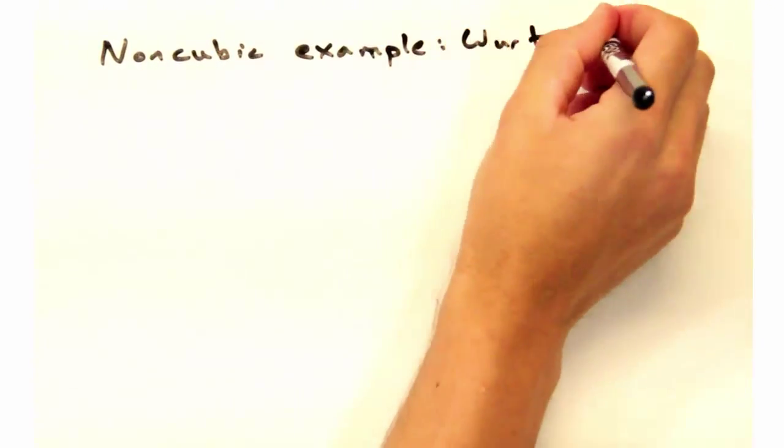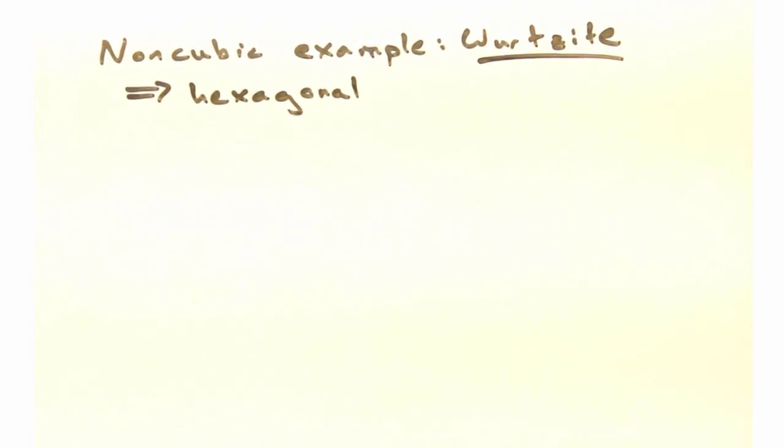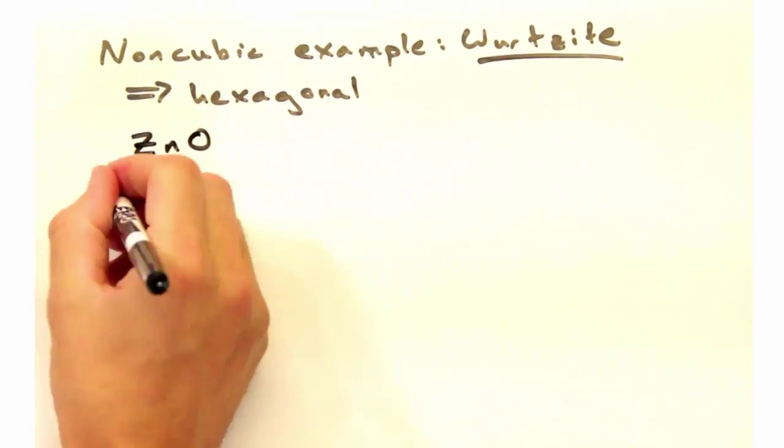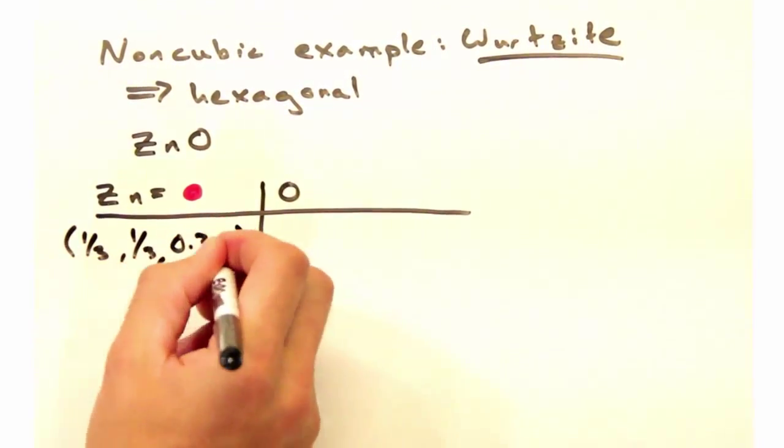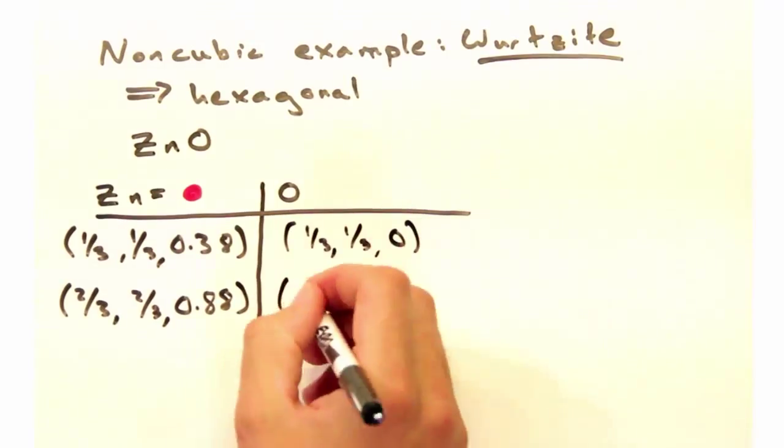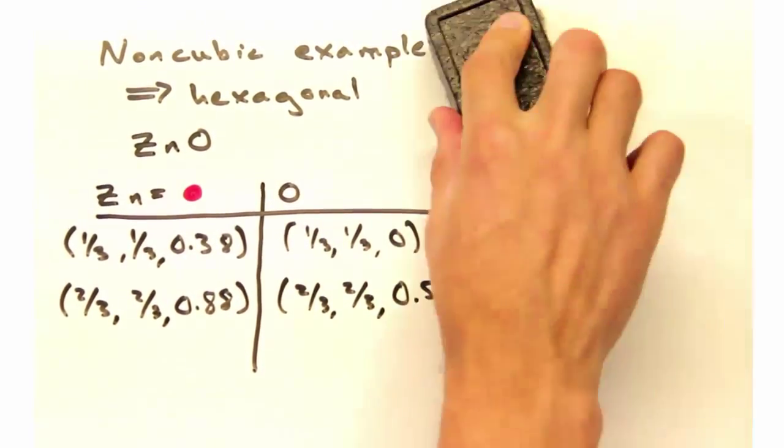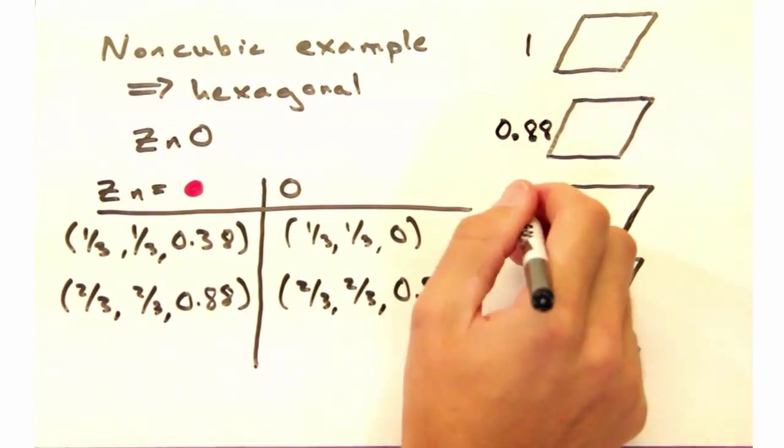So before we leave, it would be good to go over a non-cubic example. Here we have the wordsite structure, which is a hexagonal crystal. Like in the perovskite structure, here the coordination of the B atom is not quite clear. Let's see if slices can help us out.